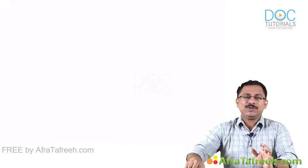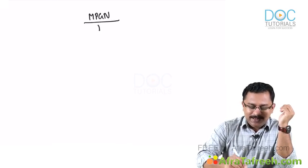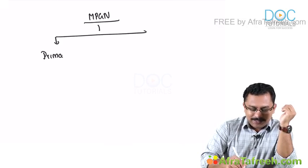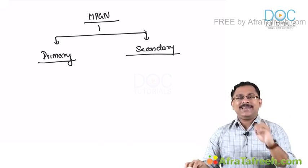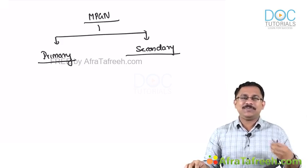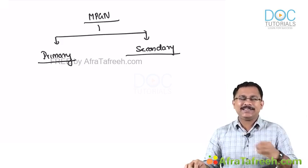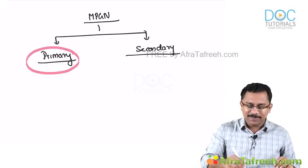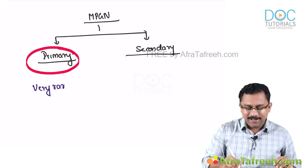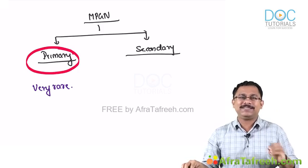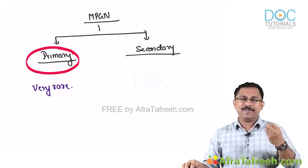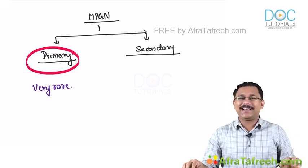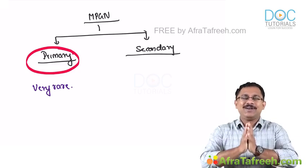MPGN is, like other disorders, primary as well as secondary. Unlike the previous disorders — minimal change disease, FSGS, and membranous nephropathy — the primary form of MPGN is actually very rare. Most of the causes of MPGN are secondary, and it is very important to learn the secondary causes because they are commonly asked in exams.